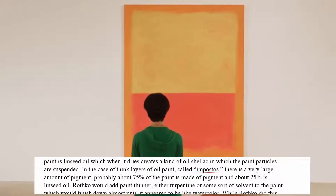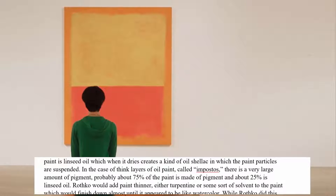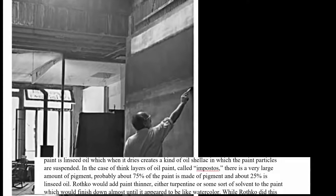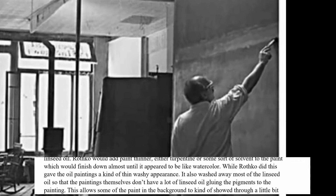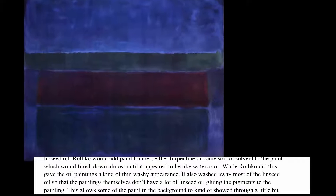The problem with what Rothko did is that instead of using thick layers of oil paint called impastos — which are thick paint with roughly 75% paint particles to 25% linseed oil — Rothko would add linseed oil and turpentine and almost wash the color off, using a very high proportion of paint thinner. When he does this, he's actually washing away the glue that would hold the painting together.